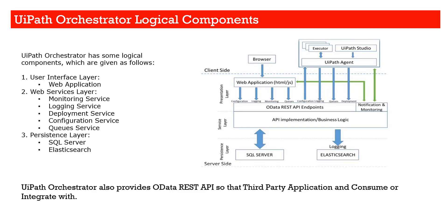There is another component called logging. Using the UiPath Orchestrator web config, you can define whether logging should happen only in the file system, only in the database, both file system and database, or file system plus database plus third-party system. It's a configuration-based system. You can install Elasticsearch on the same machine as Orchestrator or on a different machine, and configure it via the web config file so that logging happens into Elasticsearch.